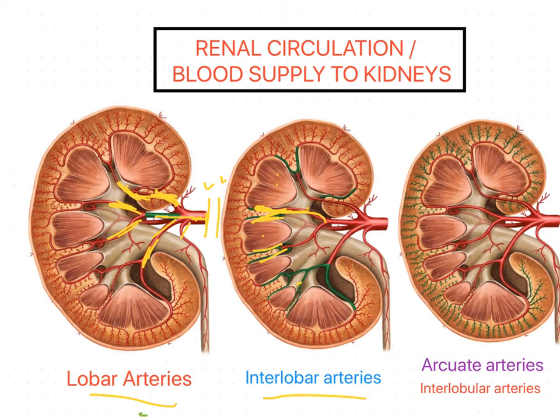So the sequence is: renal artery → anterior division → segmental arteries → lobar arteries → interlobar arteries. These interlobar arteries run up to the corticomedullary junction.